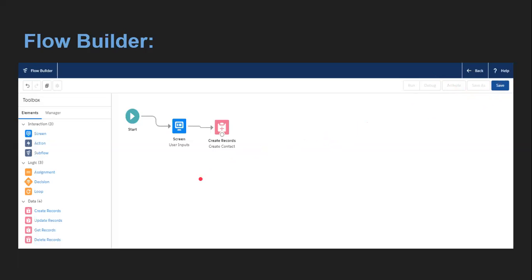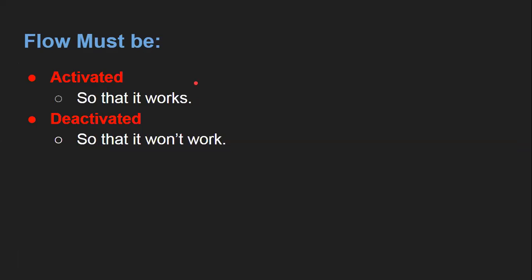These are some essential things to know about Flow Builder. After implementing a flow, focus on two key states: Activated and Deactivated. If you want your flow to work, you should activate it. If you want your flow to stop working, you must deactivate it.